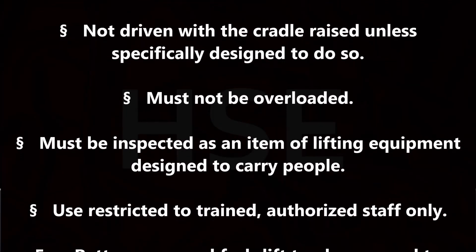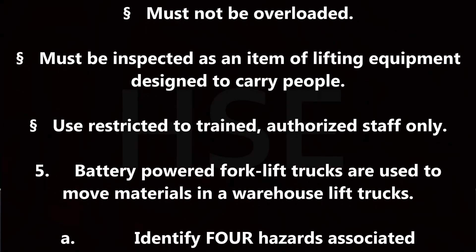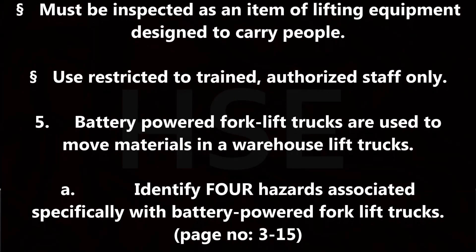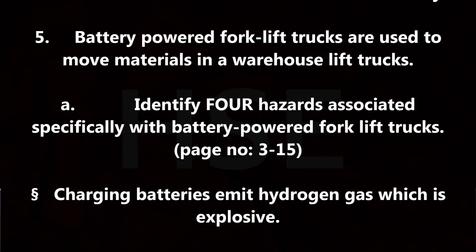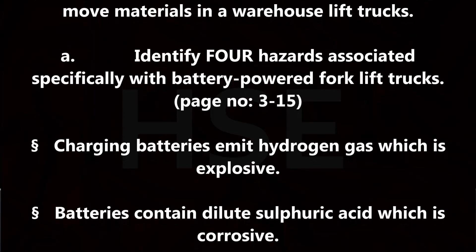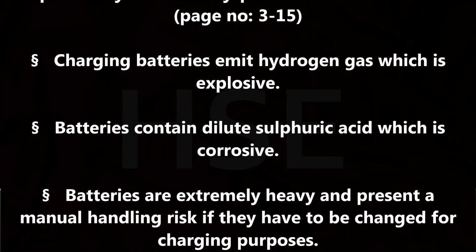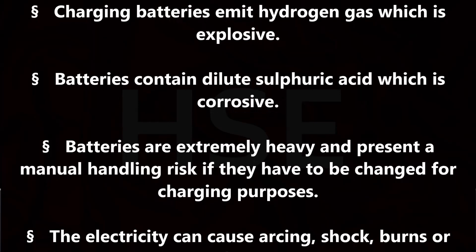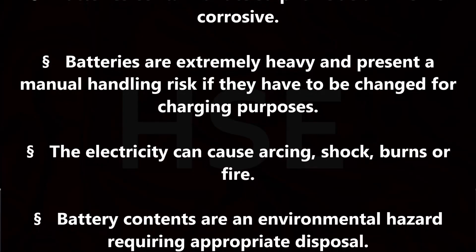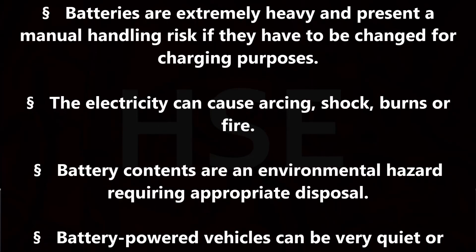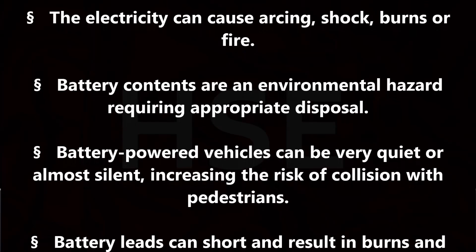Battery-powered forklift trucks are used to move materials in a warehouse. Identify 4 hazards associated specifically with battery-powered forklift trucks. Charging batteries emit hydrogen gas which is explosive. Batteries contain dilute sulfuric acid which is corrosive. Batteries are extremely heavy and present a manual handling risk if they have to be changed for charging purposes. The electricity can cause arcing, shock, burns or fire. Battery contents are an environmental hazard requiring appropriate disposal. Battery-powered vehicles can be very quiet or almost silent, increasing the risk of collision with pedestrians.